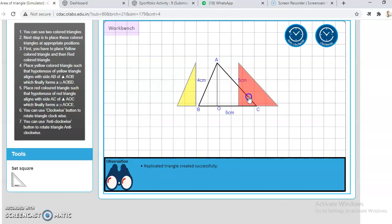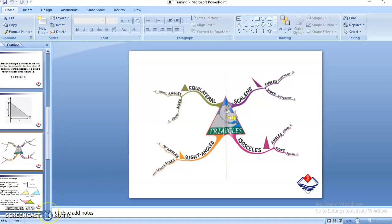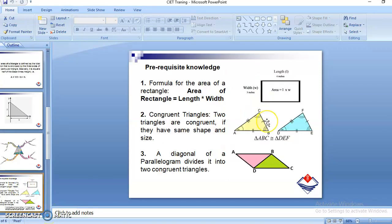Now what we have to do is we have to ultimately make a rectangle, because whenever we are trying to calculate the area of a triangle, the prerequisite knowledge is we must know what is the formula to calculate the area of a rectangle. You are already aware that the area of a rectangle is length into width.